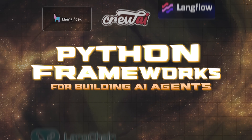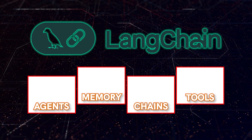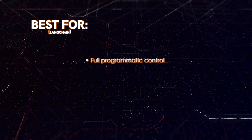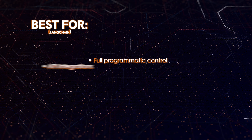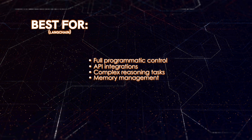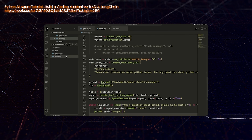Now let's dive into actual Python frameworks that make building these agents much easier. First up is LangChain, a modular Python framework that's become the go-to for building LLM applications with tools, memory, chains, and agents. You should consider LangChain when you want full programmatic control, when you're building agents that need to call APIs, perform reasoning tasks, or maintain memory, and when you're comfortable working with Python logic to connect everything together. It's extremely flexible, but there is a learning curve.